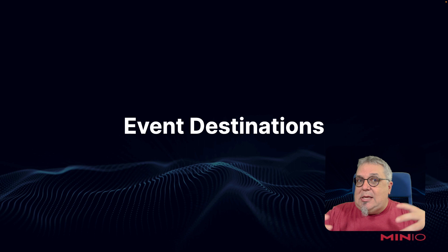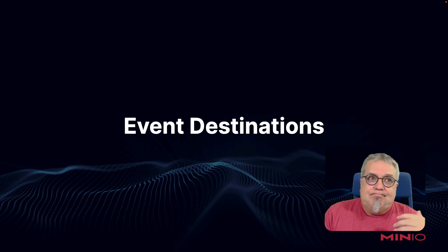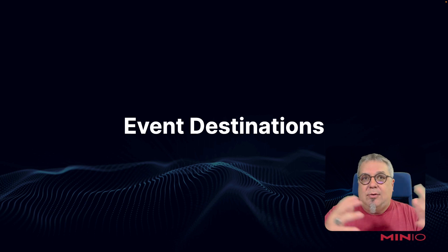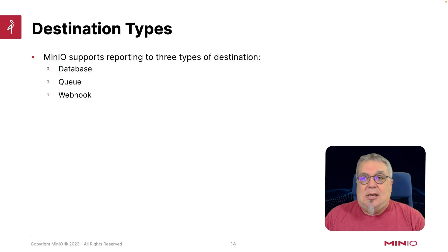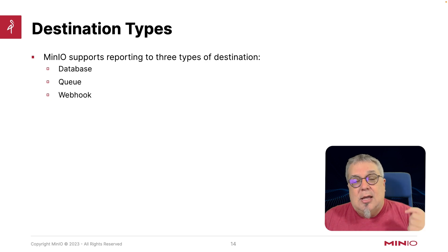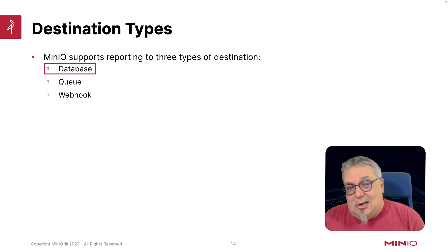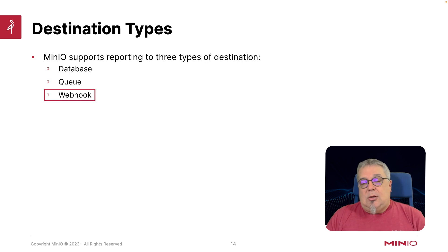So we've seen all the events that we can trigger. Where do these events go? Min.io itself is not really set up to have this exposed events handling, but you can send these events out to a destination. We have three types of destination available for Min.io: database destinations, queue destinations for message queuing, and also webhooks.